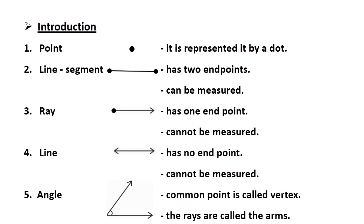An angle is formed when two lines, rays, or line segments meet at a common end point. The common point is called the vertex of the angle, and the rays are called the arms or sides of the angle.